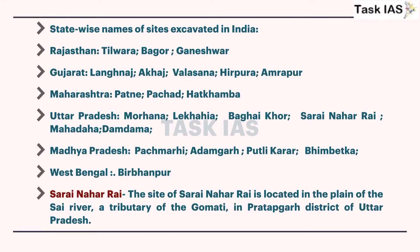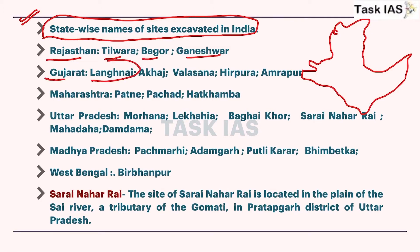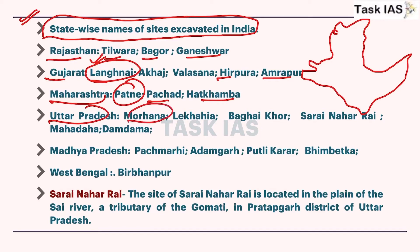Now, state-wise names of Mesolithic sites excavated in India - you can draw a map of these sites. Rajasthan: Tilwara, Bagor, Ganeshwar. Gujarat: Langnaas - remember, Langnaas is important. Maharashtra: Hirapur, Amarpur, Patne, Pachand, Hatkamba. Uttar Pradesh: Morhana, Bagai Khor, Sarai Neher, Damdama, Mahadaha - these are very famous in GS also. Madhya Pradesh: Pachmari, Adamgarh, Putli Kararo, Bhimbetka - very important. West Bengal: Bhirbhanpur.